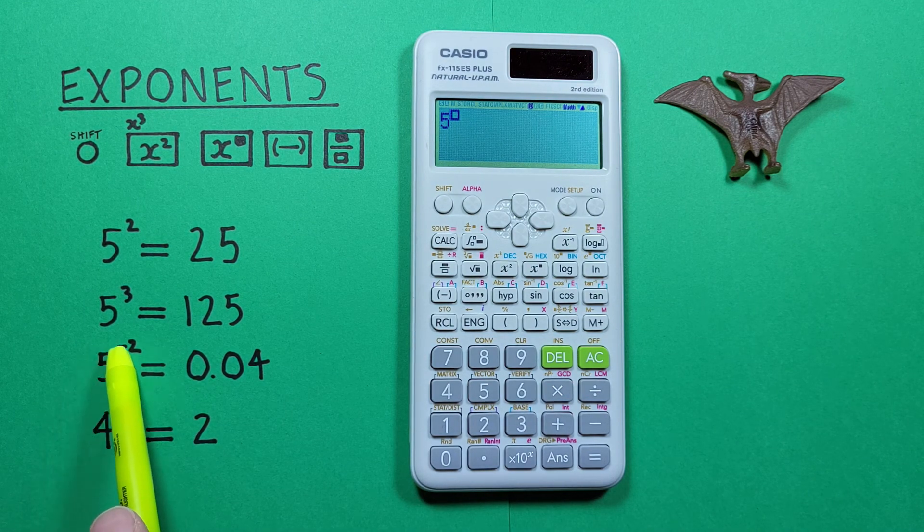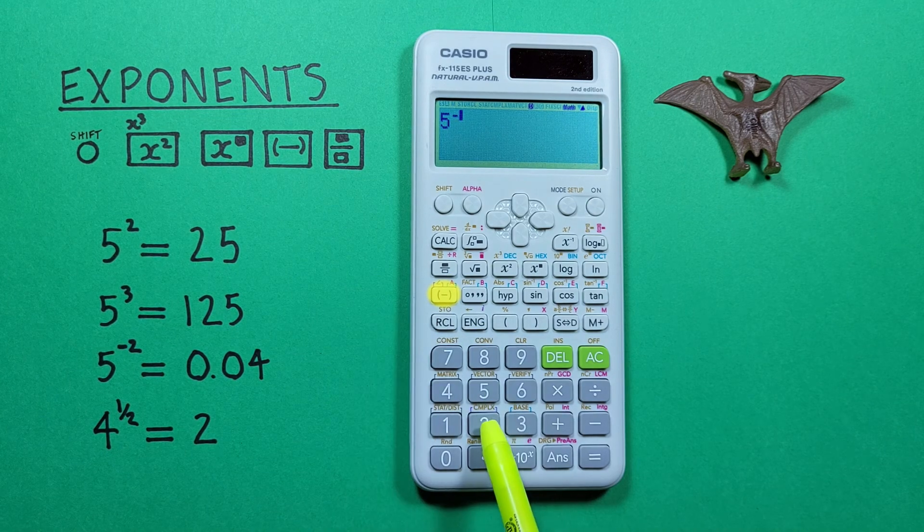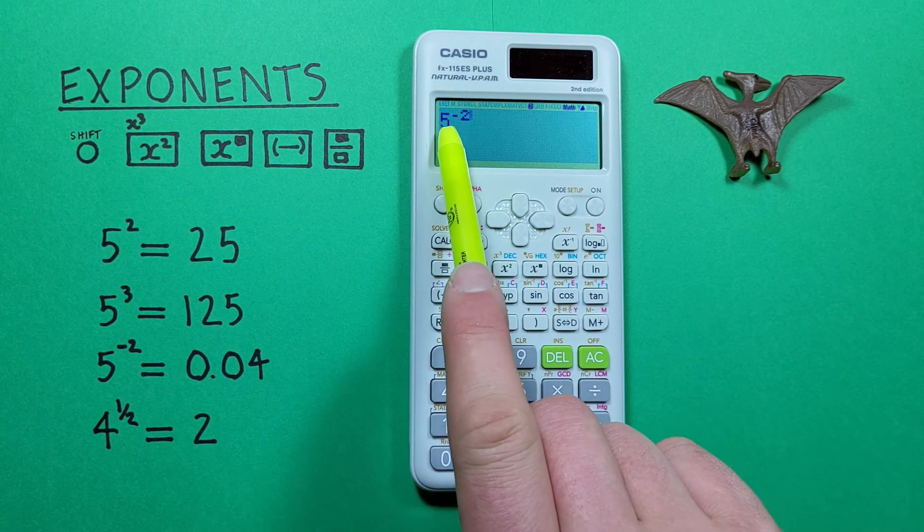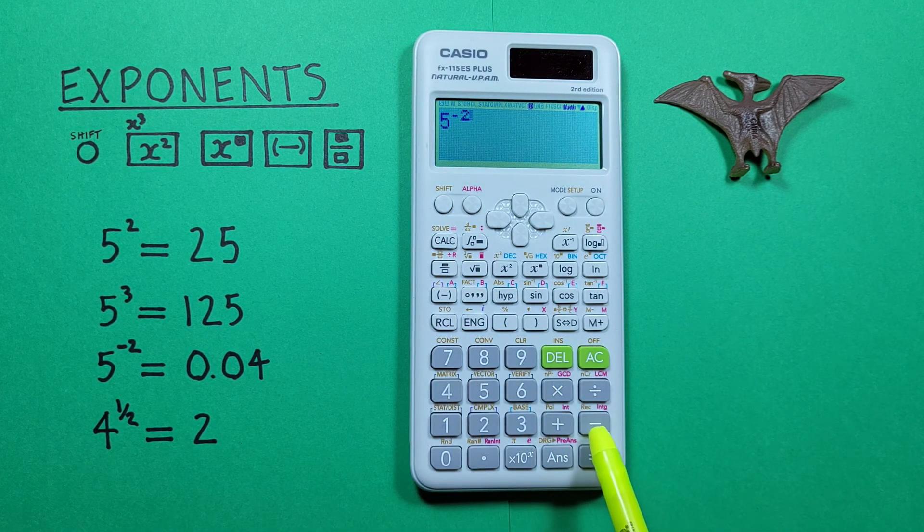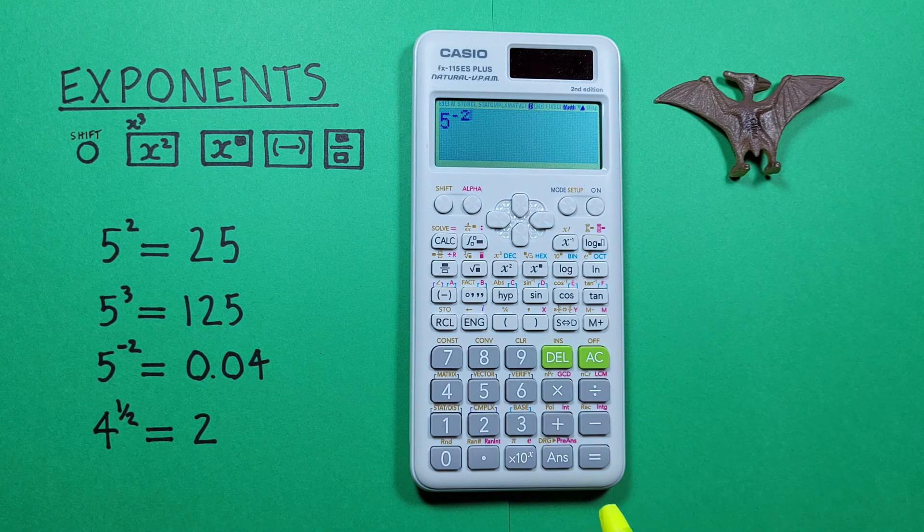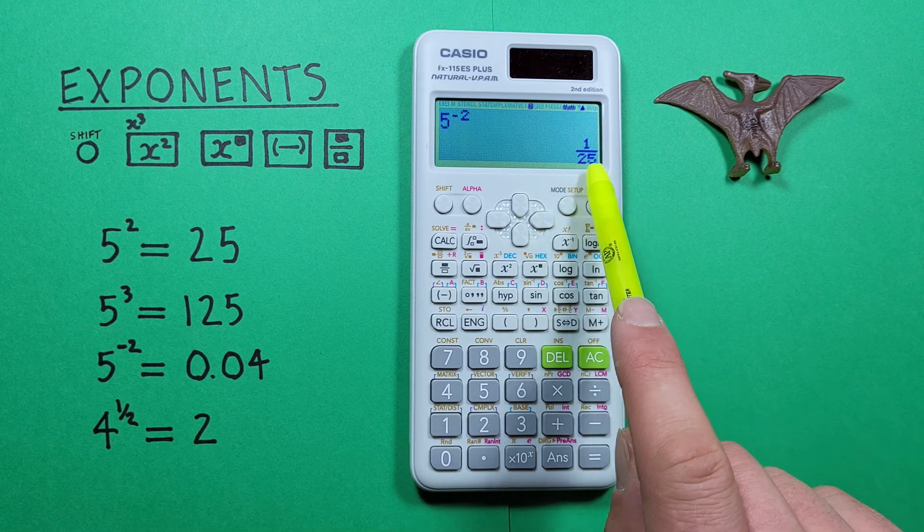So we have an exponent of negative 2, so we start with the negative and then 2. Note, if we're doing a negative exponent or any other negative number, we use this negative key, not the subtraction key, because that will give us a different result. Then we press equals, and we get a result of 1 over 25.